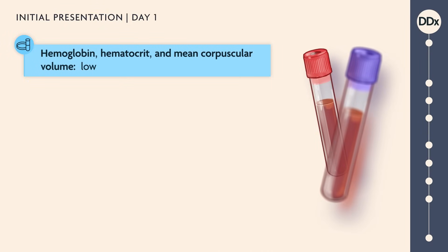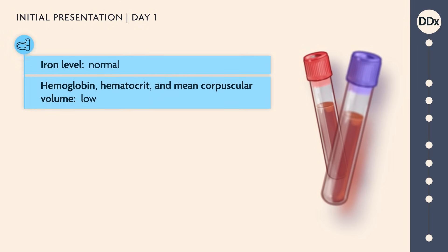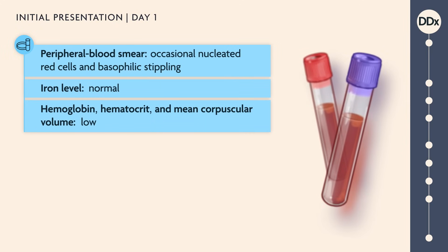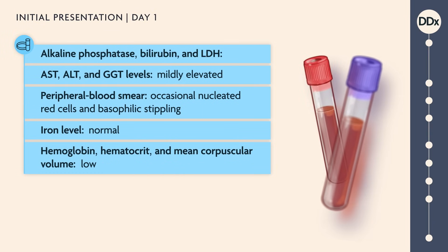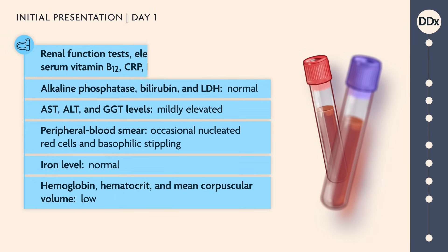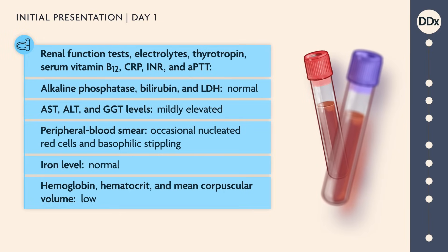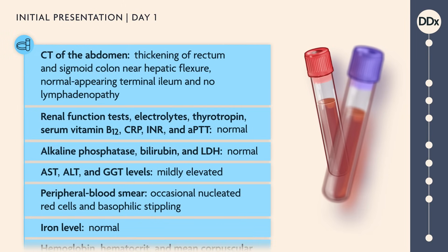The jugular venous pressure suggests volume depletion, which could be a manifestation of the underlying condition causing his abdominal pain or a consequence of the pain. Laboratory studies showed low levels of hemoglobin, hematocrit, and mean corpuscular volume. He did not have iron deficiency. A peripheral blood smear showed occasional nucleated red blood cells and basophilic stippling. AST and ALT levels were mildly elevated, as well as gamma-GT. Alkaline phosphatase, bilirubin, and LDH levels were normal. Renal function tests, electrolytes, thyrotropin, serum vitamin B12, CRP, INR, and APTT were also normal. CT of the abdomen showed thickening of the rectum and sigmoid colon near the hepatic flexure with a normal-appearing terminal ileum and no lymphadenopathy.